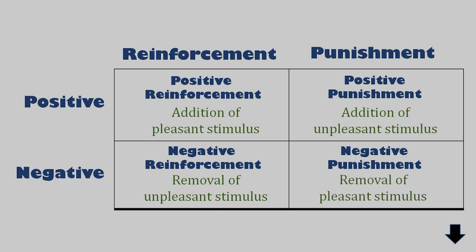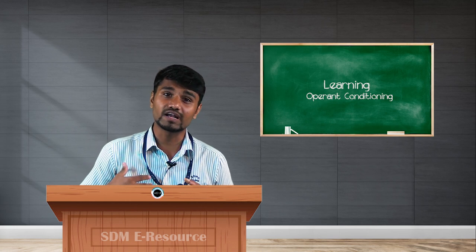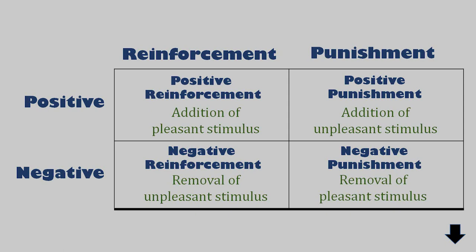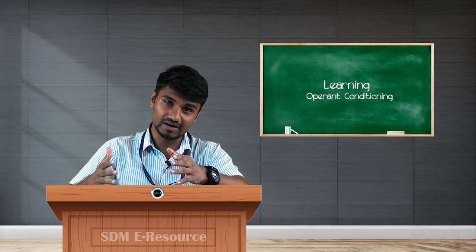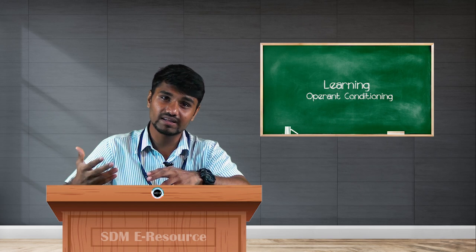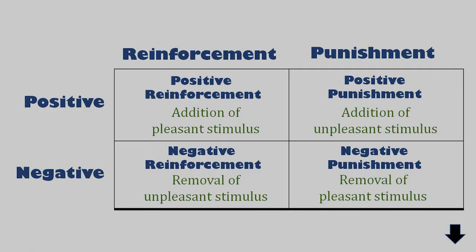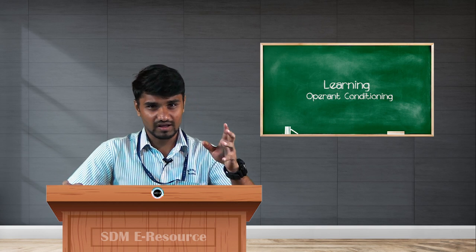Negative punishment is when a pleasant stimulus is removed. For example, if you are being very lethargic and not studying properly, your mother might take away your phone and ground you, stopping you from doing things you want to do. That withdrawal of something pleasant teaches you to stop certain behavior — it's a very effective form of instrumental learning.